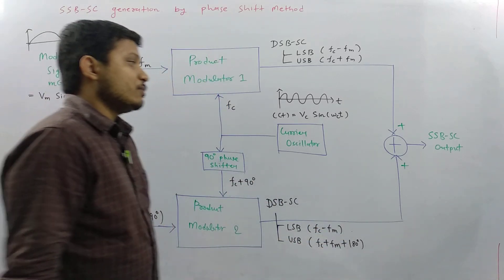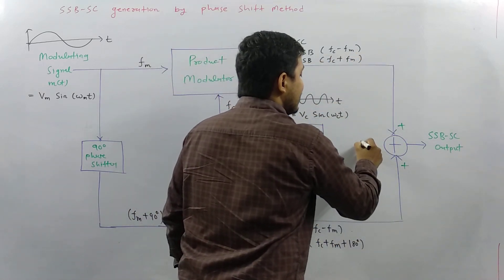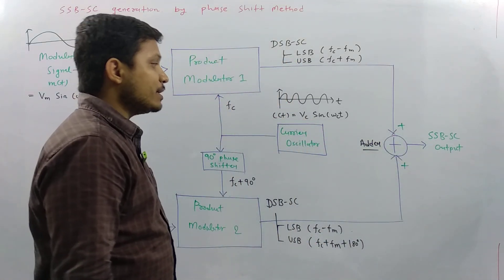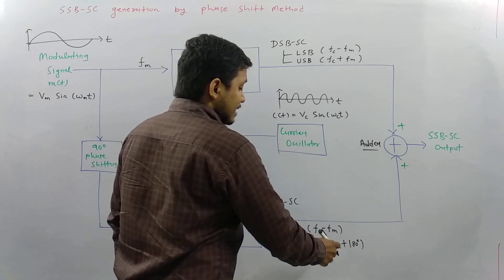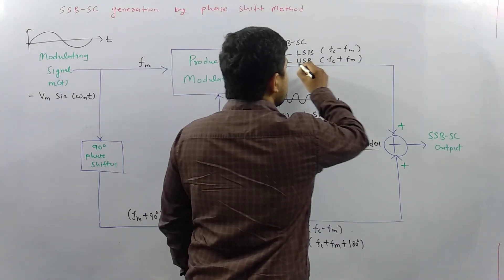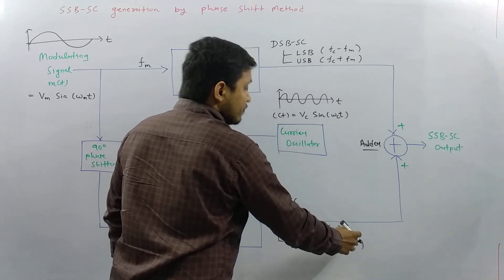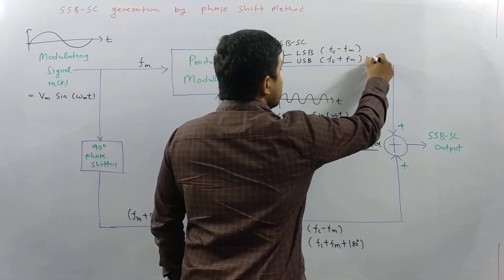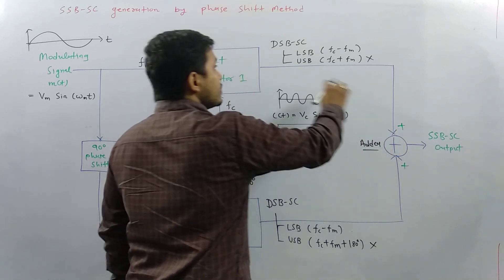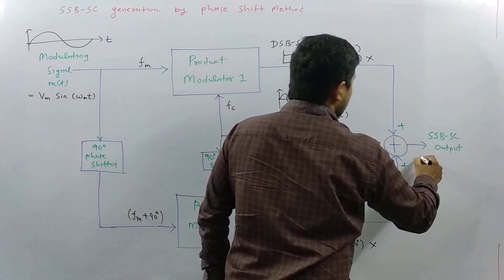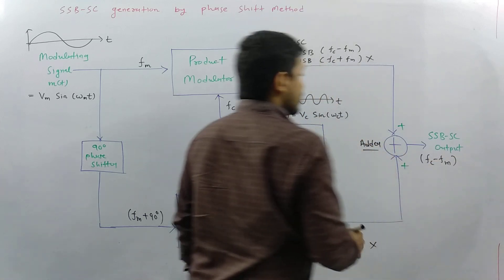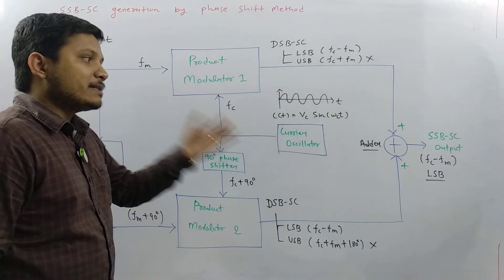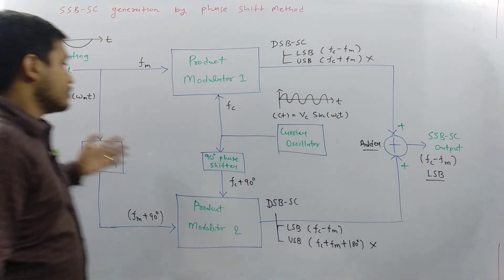When you add the outputs of both product modulators using the adder, the out-of-phase upper sideband signals cancel each other out — the USB from product modulator 1 and the USB from product modulator 2 are out of phase by 180 degrees. So the USB gets cancelled, and the output of the SSBSC is only Fc minus Fm — that is, only the lower sideband remains.